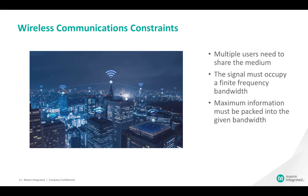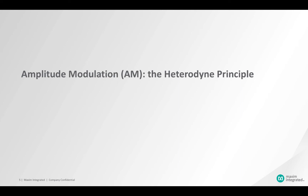The constraints that drive wireless communications are well understood. Multiple users must be allowed to share the medium, the wireless signal must occupy a finite frequency bandwidth, and it's important to pack as much information as possible into the given bandwidth. Any wireless communication protocol must deal with these constraints. Let's start with a look at amplitude modulation with the heterodyne principle, a technique that preceded quadrature modulation. We'll see how heterodyne amplitude modulation is bandwidth inefficient, calling for a better wireless communications technique.